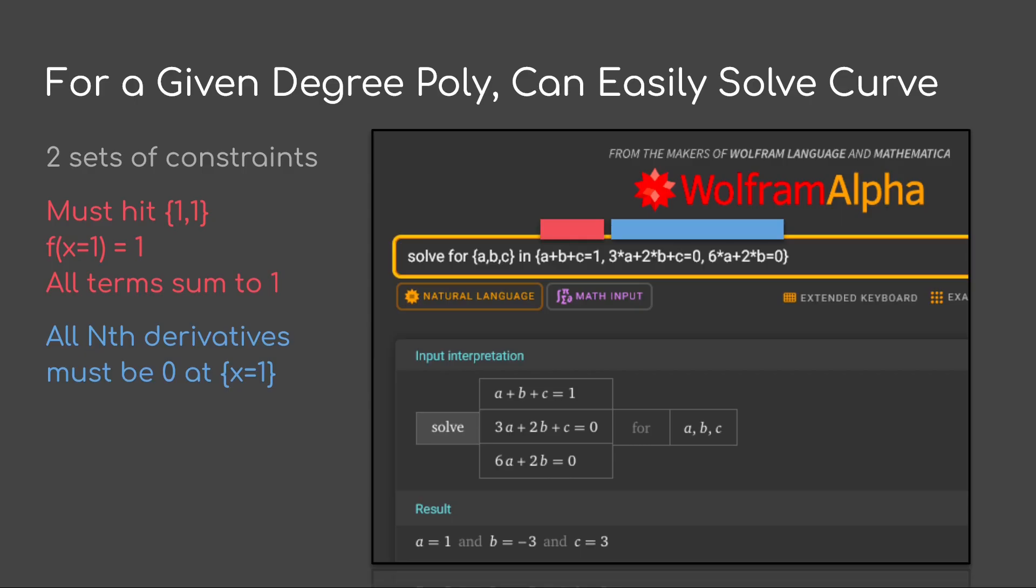So for that, we just set the function equal to 1 when x is equal to 1. In other words, all the terms in our polynomial have to sum to 1.